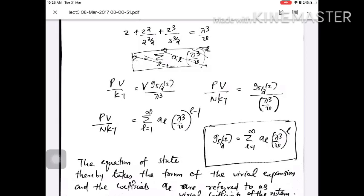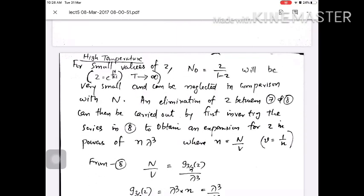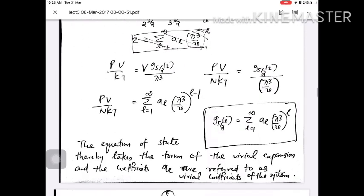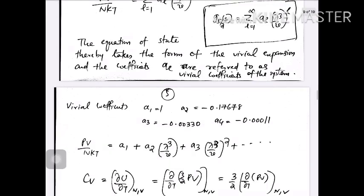In the last class we discussed the equation of state of ideal Bose gas at high temperature, that is when temperature tends to infinity. We got an equation which is pV/NkT equal to sigma l equal to 1 to infinity a_l (λ³/V)^(l−1). This is the virial expansion and the coefficients are referred to as virial coefficients, whose values can be calculated by certain methods.